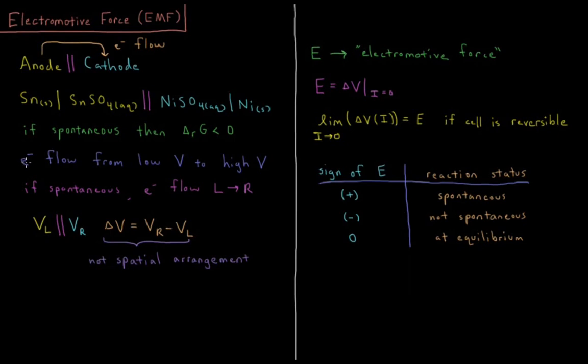Electrons are going to prefer to flow from low potential to high potential. A typical charged particle will have a positive sign, so charged particles with positive signs flow from high voltage to low voltage. But electrons have negative signs, so we do the reverse. Electrons flow from low voltage to high voltage because of their negative charge.